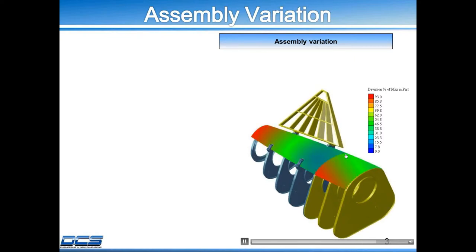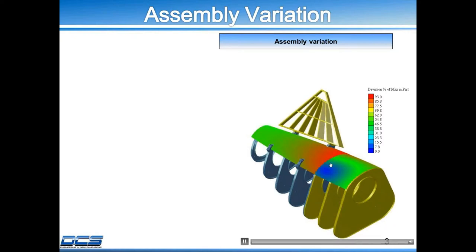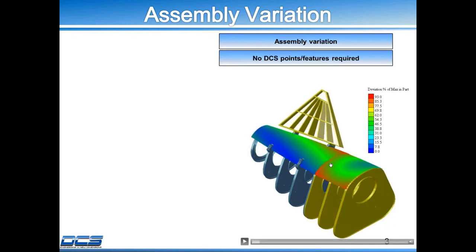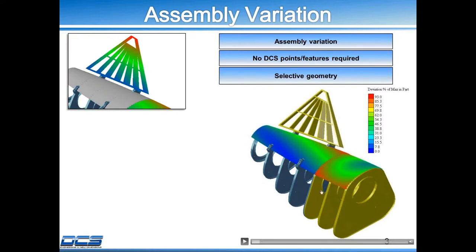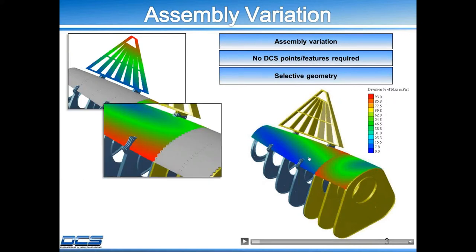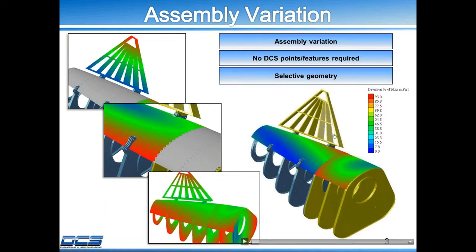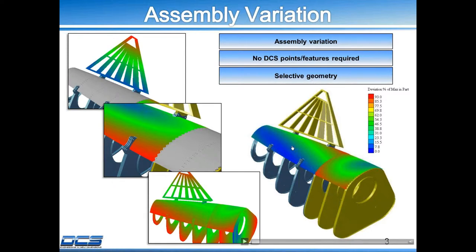Right here between the two sections, you'll see some red and some blue, so you can analyze where your trouble areas are. This doesn't take into consideration your DCS points or features, so it's not required. You can choose what you want to color map — be it the tail fin, one section of the fuselage, or just the whole model. Any model you have, you can color map whatever you want. I'll be showing you guys a video of how to do this, going through the clicks and everything.